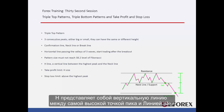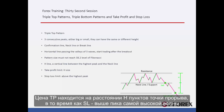H is a vertical line between the highest peak point and the neckline. TP would be H pips away from the breakout point, while SL would be above the peak point of the highest wave.